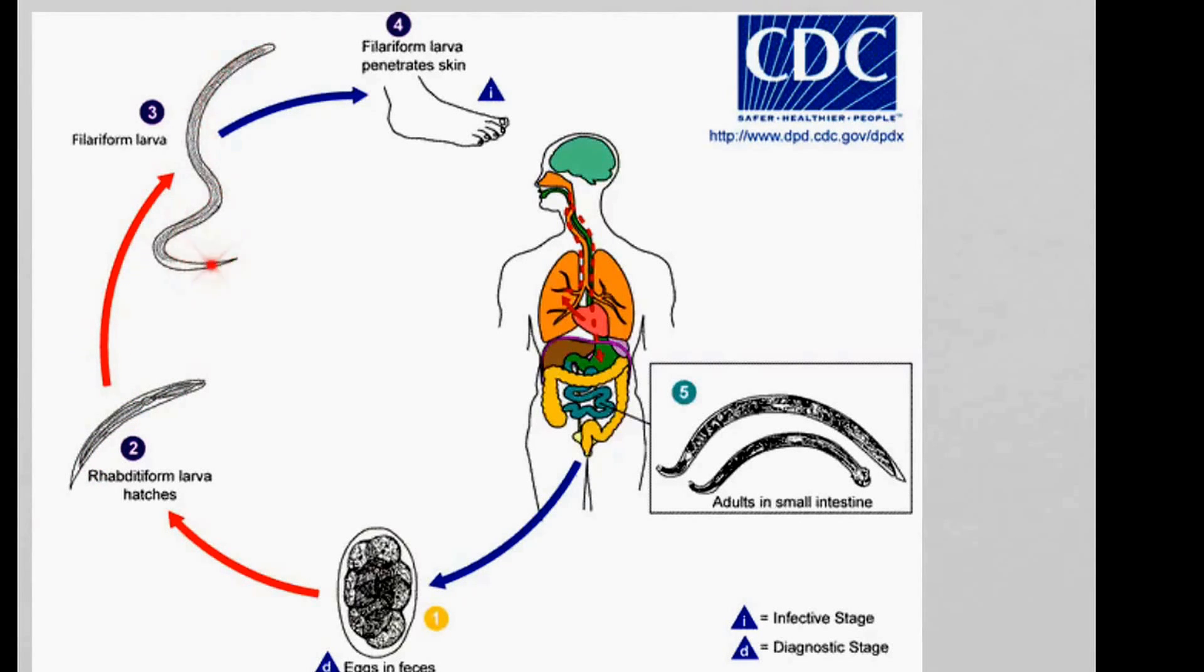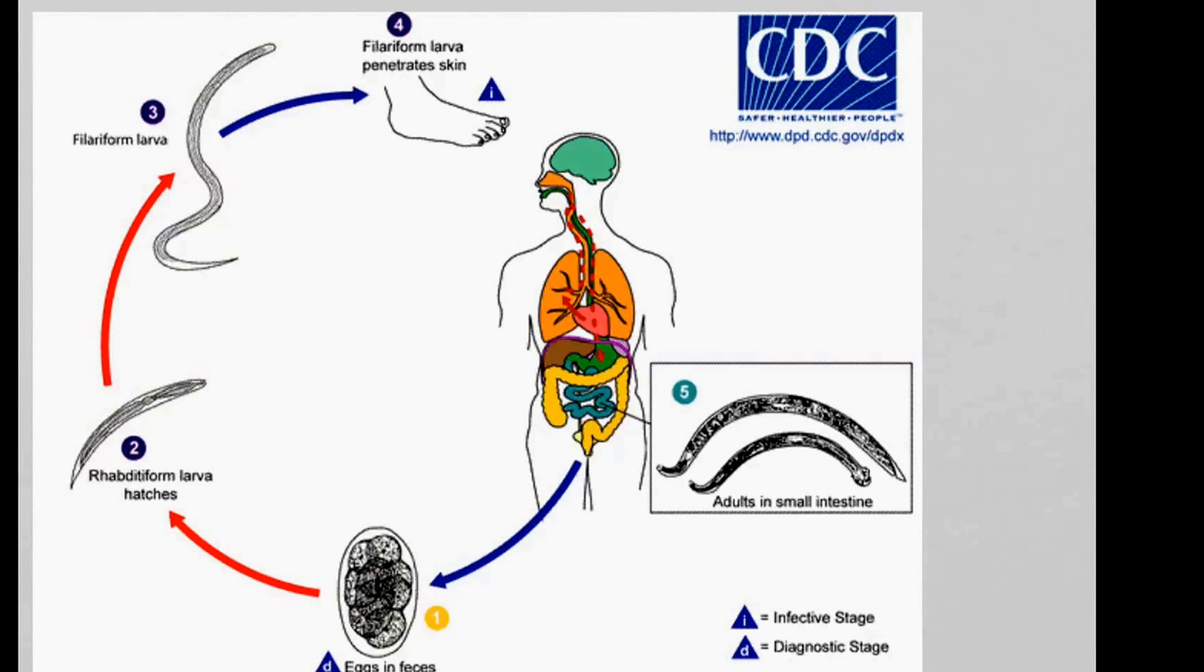And these filariform larvae, they then usually live in the soil and they just simply wait for an unsuspecting victim to come along. And they attach themselves to the victim. So this could be either if you walk around barefoot or if you touch some soil, some infected soil with your bare hands. And then these filariform larvae break through the skin, they penetrate the skin, they can do that.